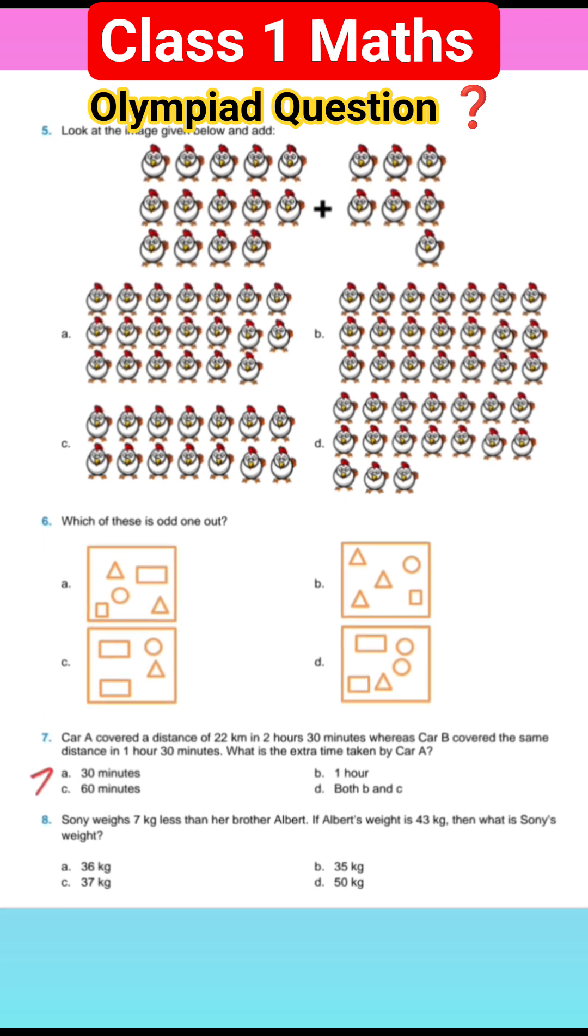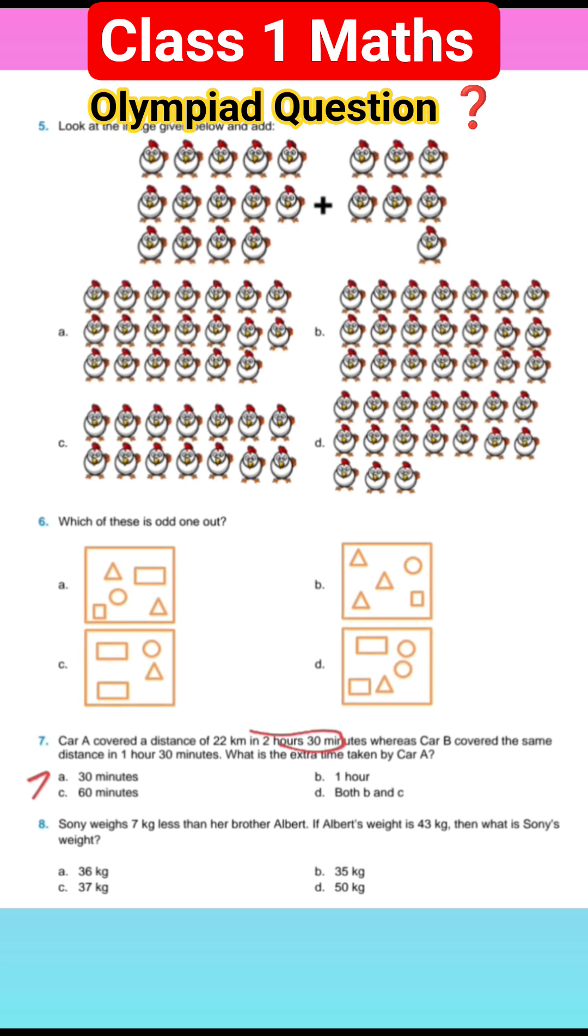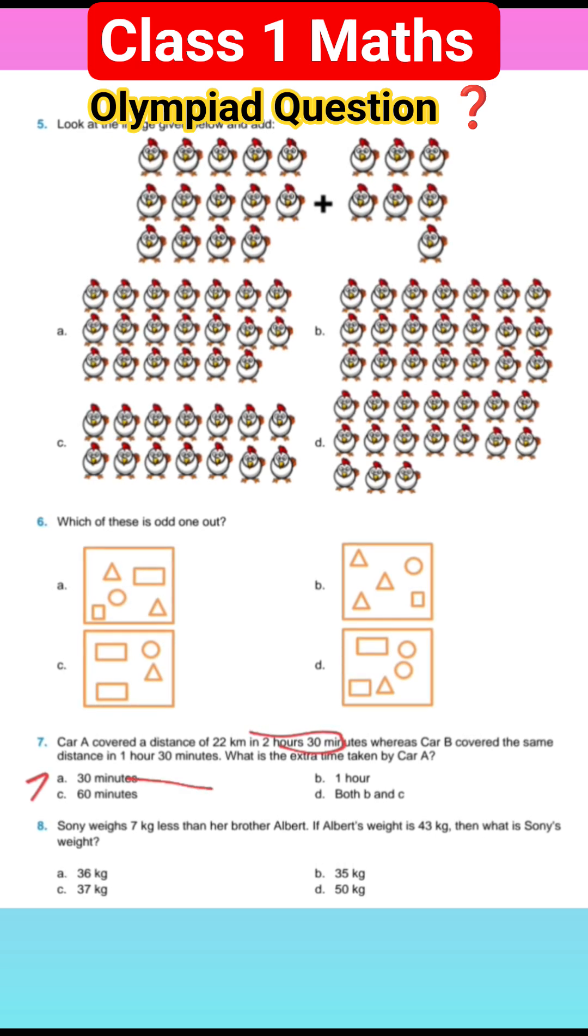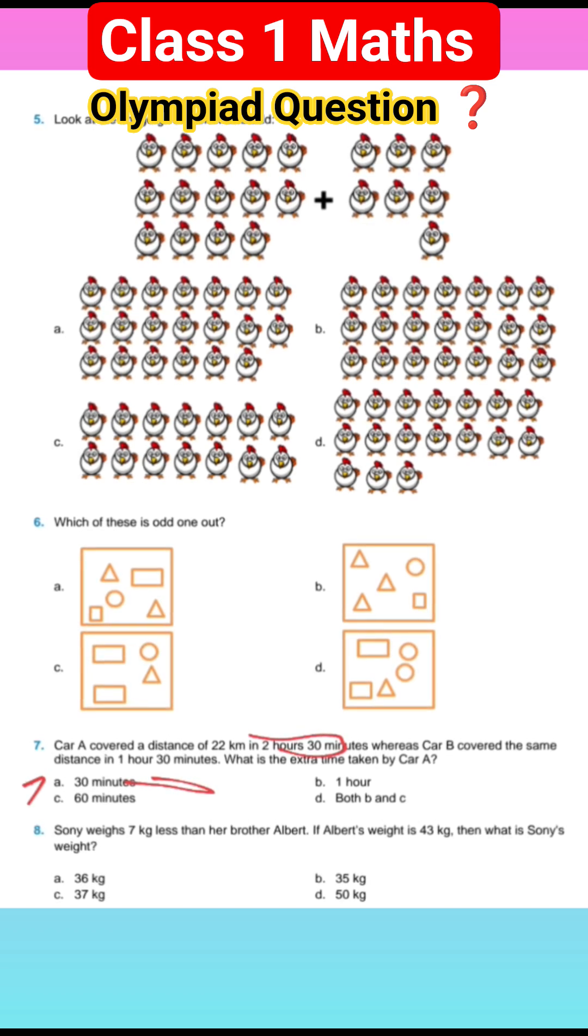Car A covered the distance of 22 kilometers in 2 hours 30 minutes, whereas Car B covered the same distance in 1 hour 30 minutes. What is the extra time taken by Car A? So Car A, Car B.